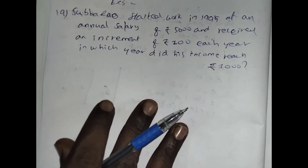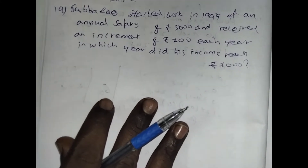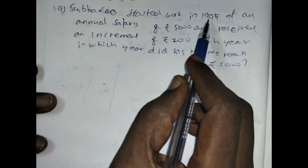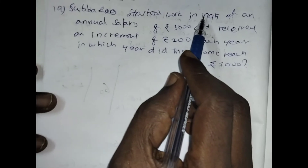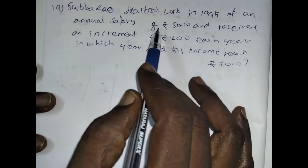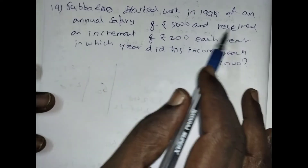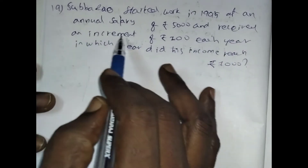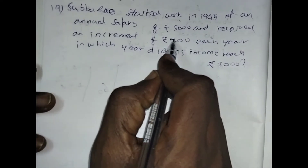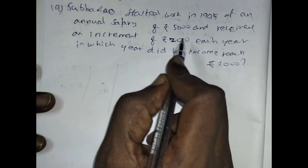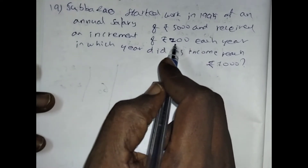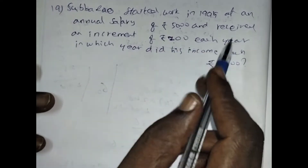In this problem they discussed about Suparo's salaries. He started getting a salary from 1995 — an annual salary of 5000 rupees — and received an increment of 200 rupees every year. So the starting salary is 5000.